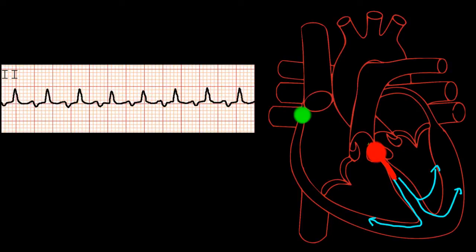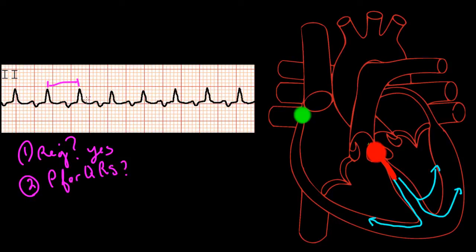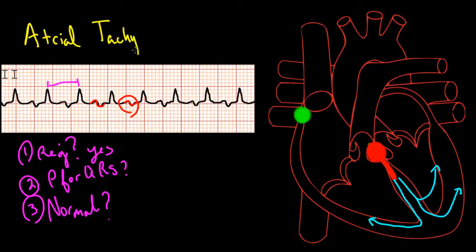Let's look at our second EKG. If you'll notice, this is very similar to our first EKG. Let's ask ourselves those same three questions. One, is it regular or irregular? And this one is evenly spaced, so it's regular. Two, is there a P for every QRS and a QRS for every P? And if we look, there is a P wave for each QRS. And three, are the P waves normal? And if you notice, this P wave is different than the P wave we saw before. So this is something called atrial tachycardia, or ectopic atrial tachycardia.